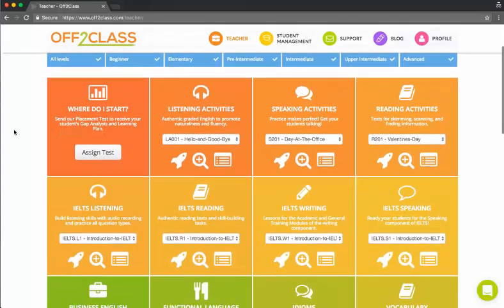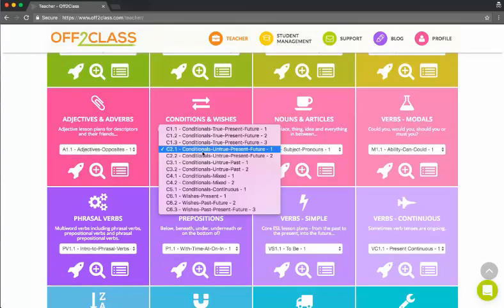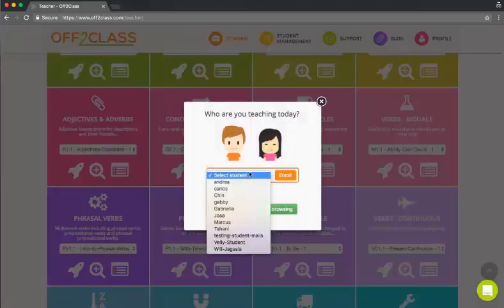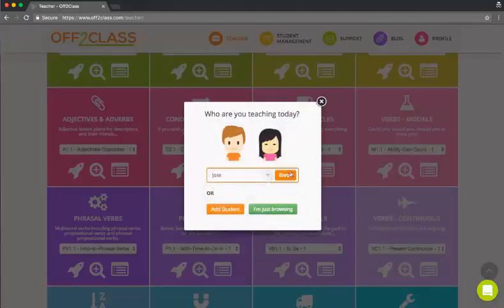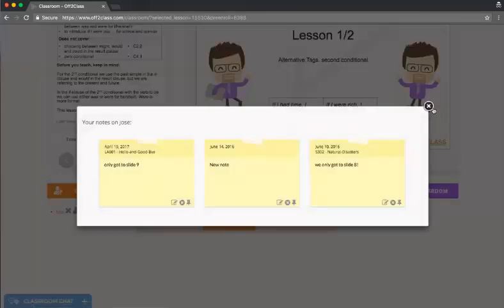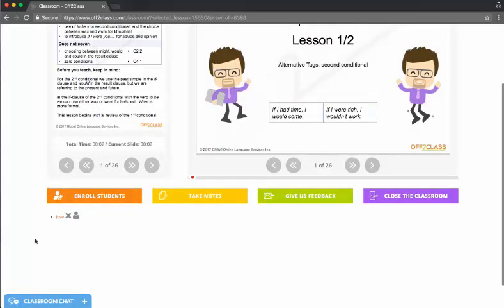So I'm going to show you how to set this up. I'm going to launch a lesson. Today I'm going to teach my student a conditionals lesson. So I launch the lesson and I enroll my student. I'm teaching Jose today. I've launched the classroom and I can see down here that Jose is properly enrolled in the lesson.